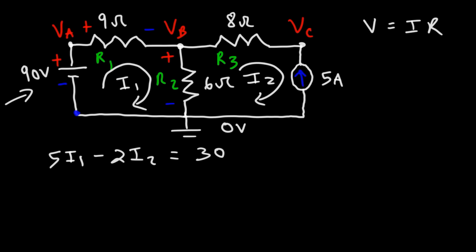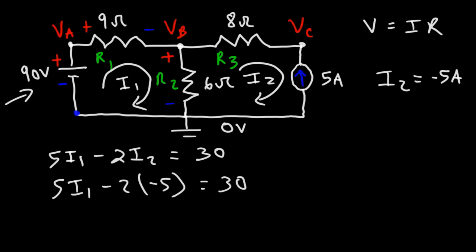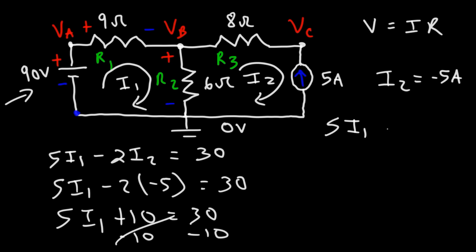What is the value of I2? I2 is going in the clockwise direction, but we have a current of 5 amps going in the counterclockwise direction. So I2 is negative 5 amps because it's opposite to the actual direction of the current. Replacing I2 with negative 5: negative 2 times negative 5 is positive 10. Subtracting 10 from both sides gives 5I1 equals 20, and dividing by 5 gives I1 equals 4 amps.